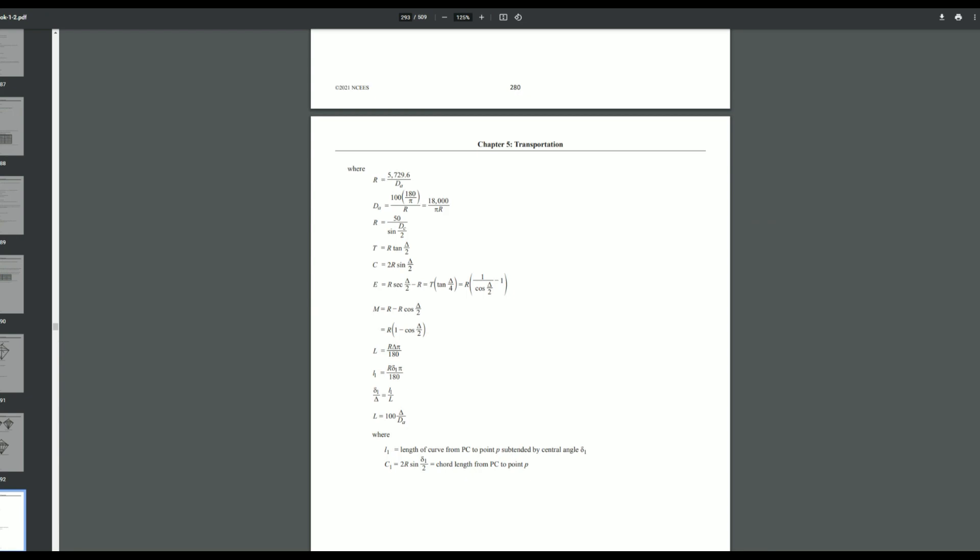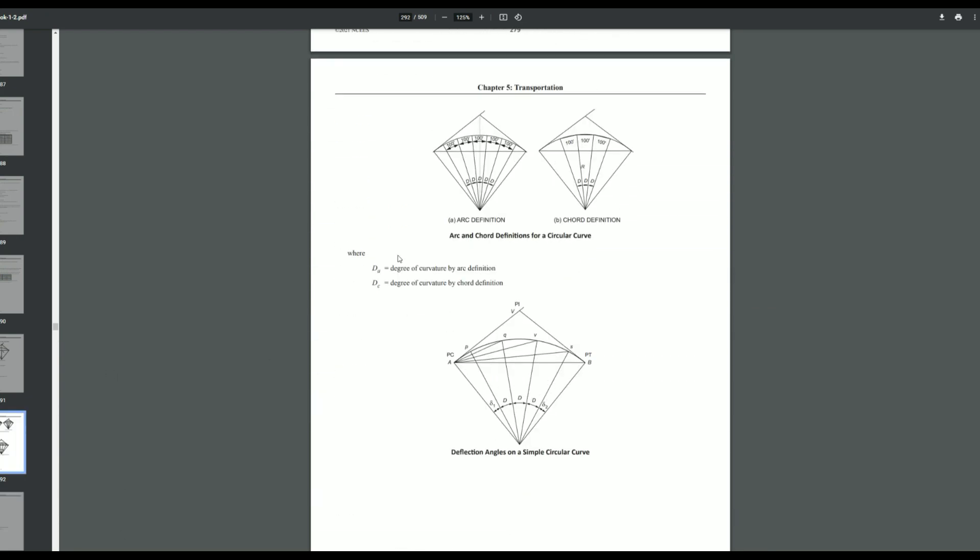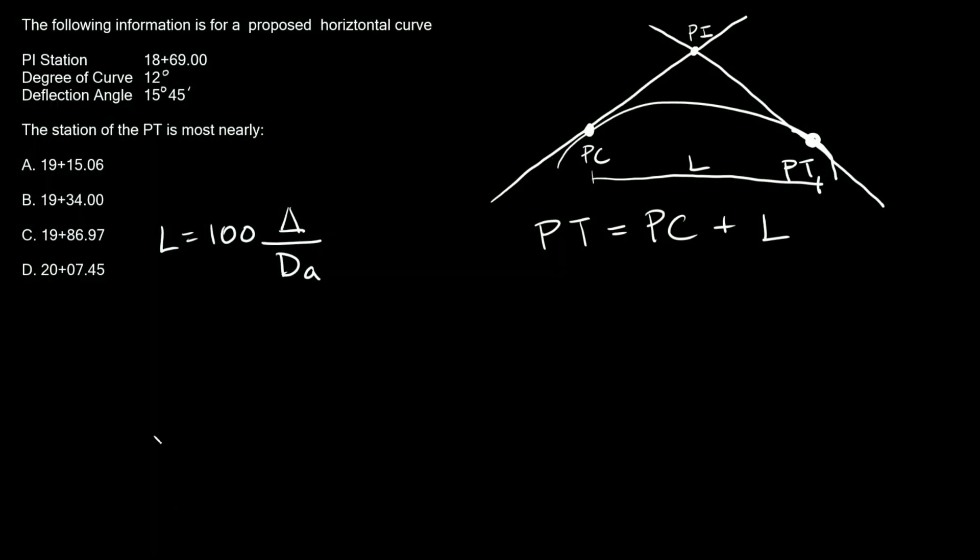So we can go back to clarify really quick. So if we scroll up a little bit here, we can see that dA is the degree of curvature by arc definition. So degree of curvature by arc definition would be 12 degrees.